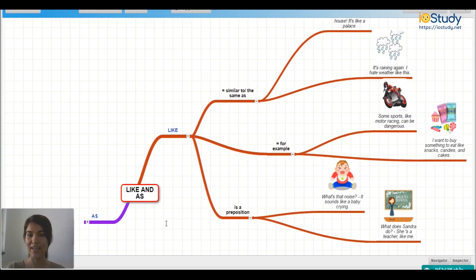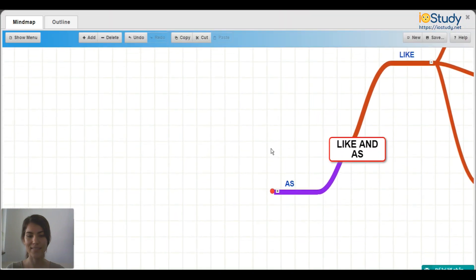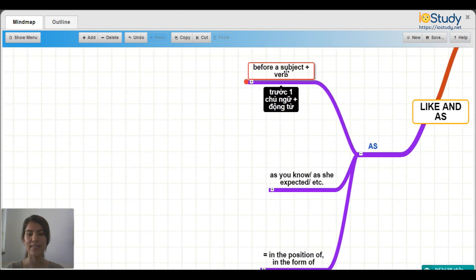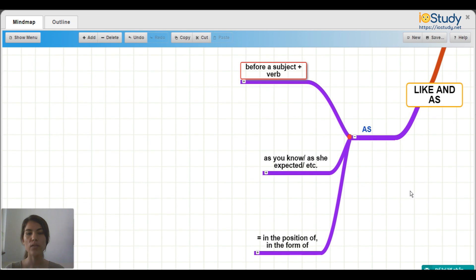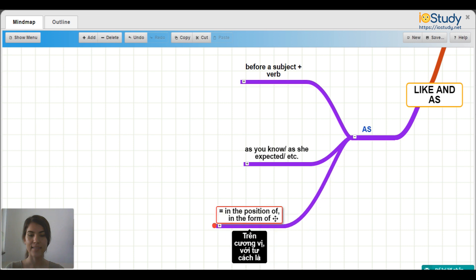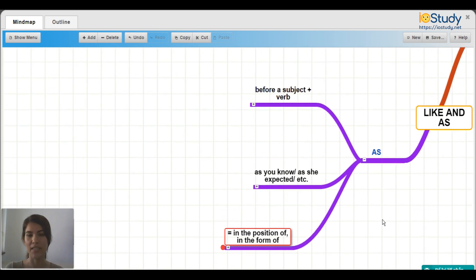So that's your mind map for like. Let's go over to this side to talk about as. So we can use as in three instances. We use as before a subject plus a verb, as you know, as she expected, etc. And in the position of, or in the form of. So let's see some examples here.